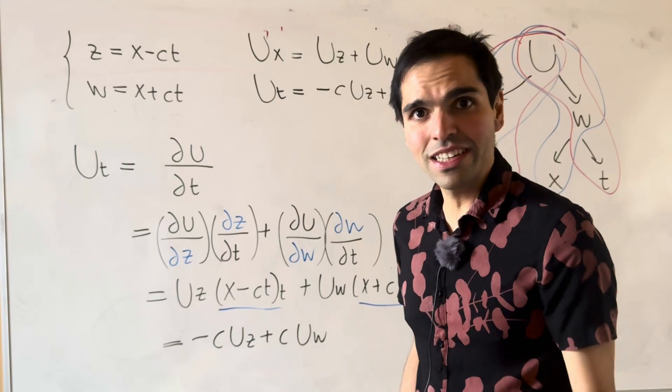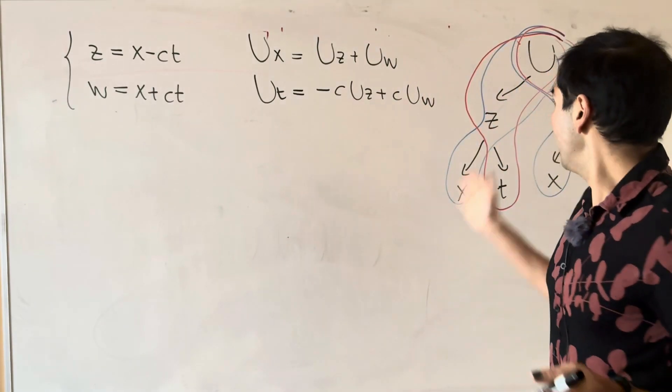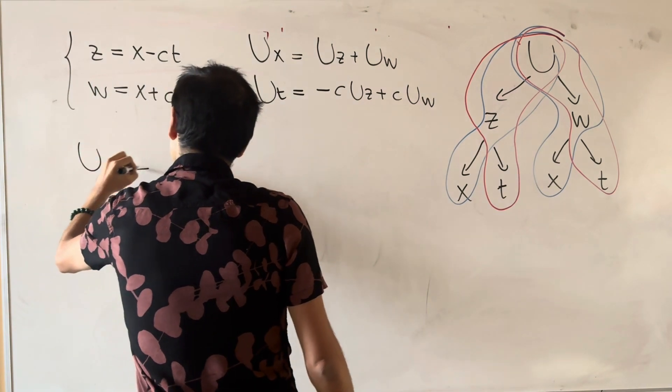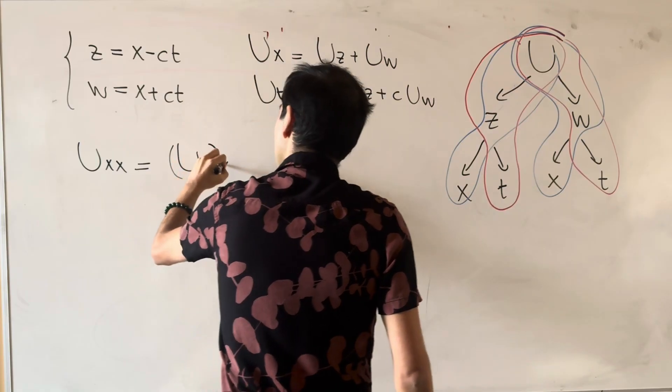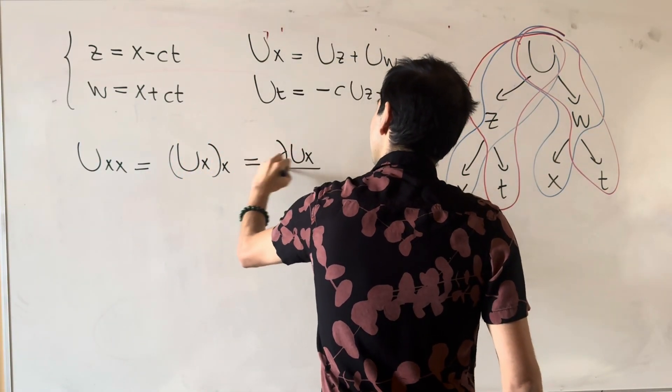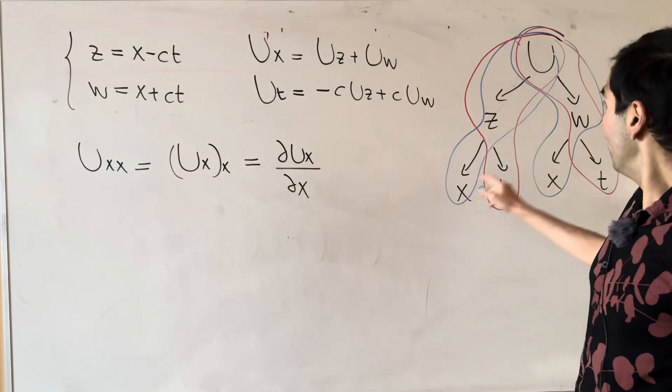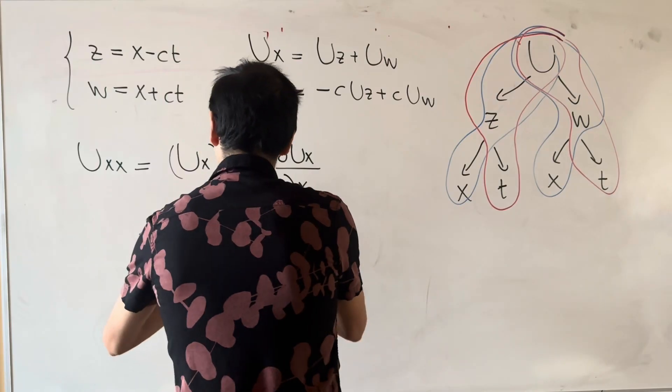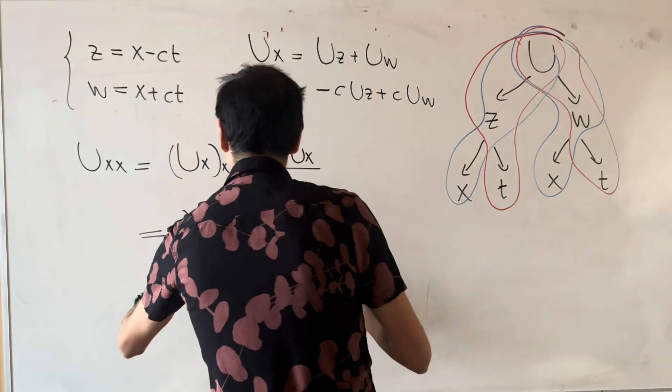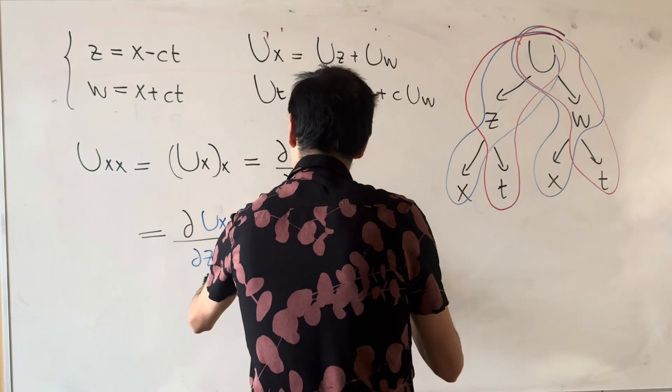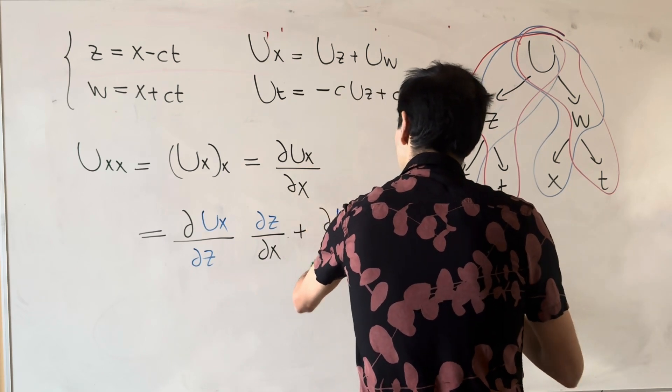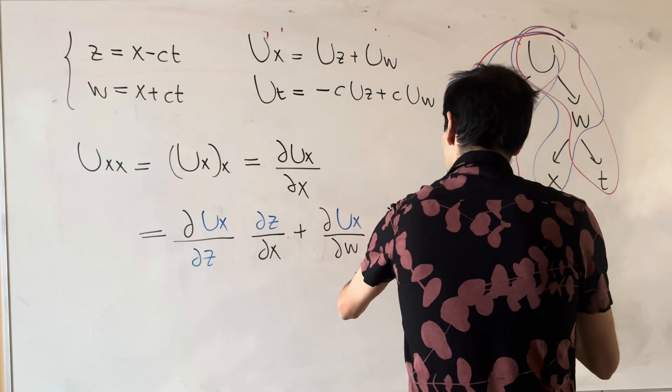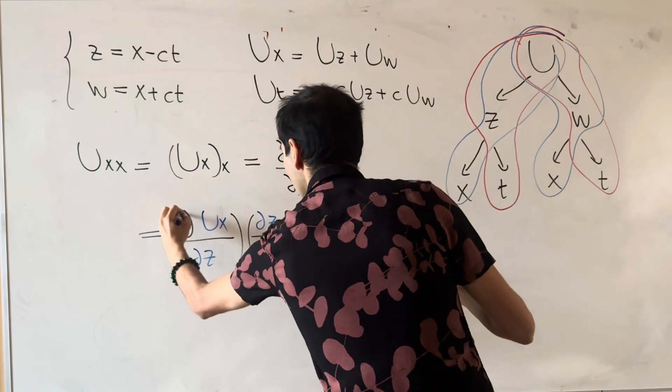That was for the first order partial derivatives, and now let's move on to the second order ones. And well, the good news is it's almost the same thing. So it's the same chain rule diagram. So let's do U_xx. Well, that is U_xx. Which is dU_x over dx. And now we just follow the same chain rule diagram again. So this becomes dU_x over dz times dz over dx, and then plus dU_x over dw, and then dw over dx.